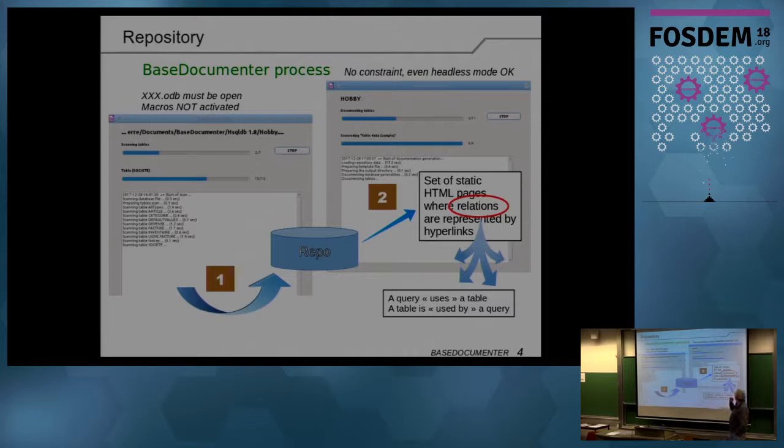So all the relations will be represented as hyperlinks. This is fundamental in the resemblance here. But we will use the notation, a query uses a table, and a table is used by a query. It is, of course, symmetry. You must be able to identify from a table which are the queries that are using that table, and in reverse, you can jump from the query which are the tables used by the query. So that symmetry is important, and for impact changes, you must be able to go, of course, in both sides, in both directions.